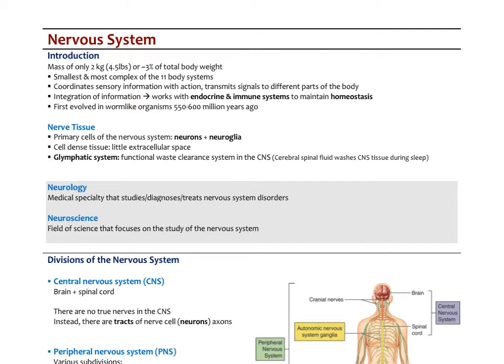The nervous system — including the brain and spinal cord (the central nervous system), as well as the peripheral and autonomic nervous systems — helps maintain homeostasis. The nervous system works from one end, the endocrine system through the blood from the other, and so does the immune system. The first nervous systems evolutionarily were found in worm-like organisms about 550 million years ago, and we can trace increasing complexity through invertebrates up to the present.